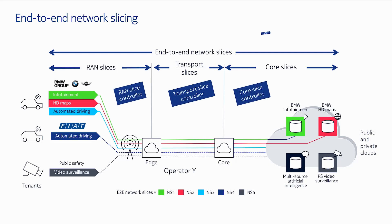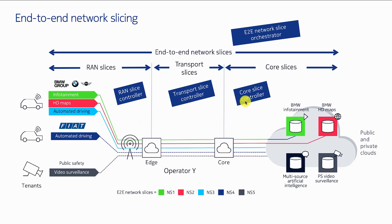Each of these slices, sometimes called sub-slices, needs various controllers: a RAN controller, a transport controller, a core controller, and we need an end-to-end network slice orchestrator. Let's see how we can create these end-to-end network slices.